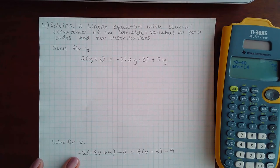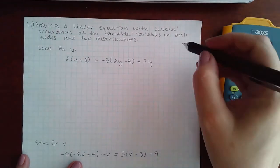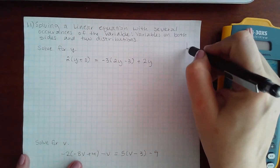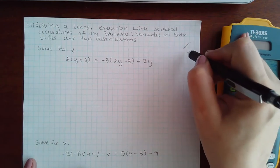Here we have solving a linear equation with several occurrences of the variable on both sides and two distributions. So again we follow the six steps. Step one is to eliminate fractions. I don't have any.